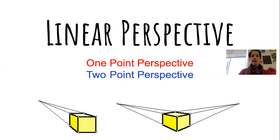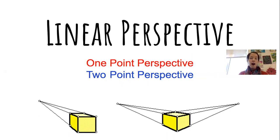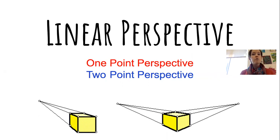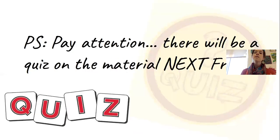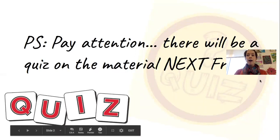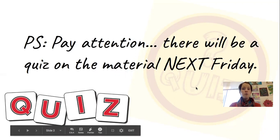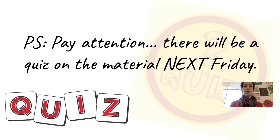So we are going to be talking about linear perspective. There are two main types of linear perspective we will cover. There are several other kinds, but we are not going to delve into those simply because one point and two point are more commonly seen and used in art and in the world around us, so it makes more sense to understand how to use those two types. Also, your weekly quiz this Friday will actually be about linear perspective, so make sure you are taking notes, paying attention, and following along.